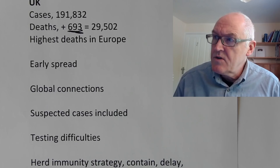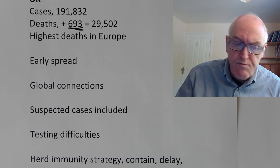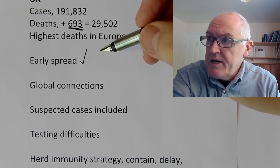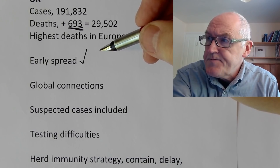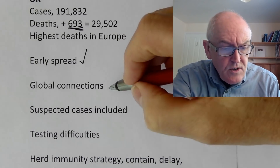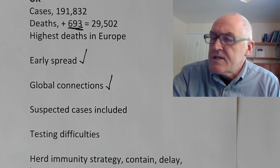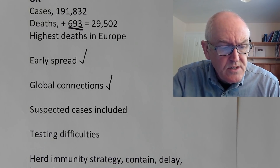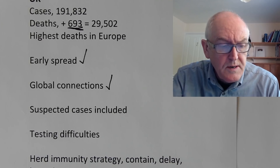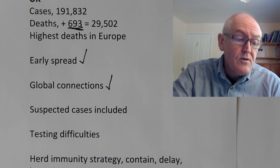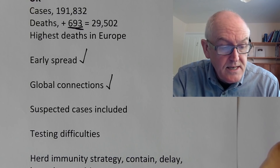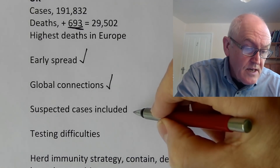Why have things gone so badly in the UK? Well, there was quite a lot of early spread before this was picked up — community transmission at an early stage. Also, London has a lot of global connections, which is probably why there was this epicenter that started in London, because there are flights coming in from all over the world, including from China in the early days and from Italy in the slightly later days.